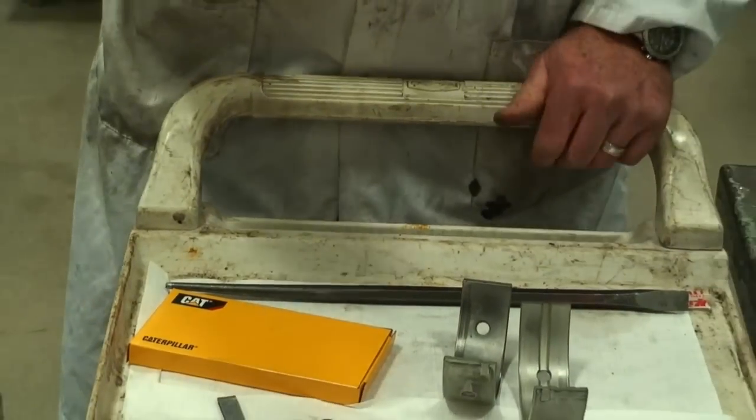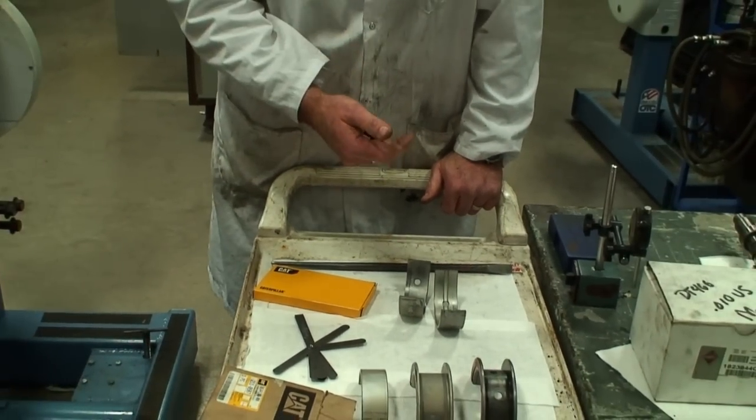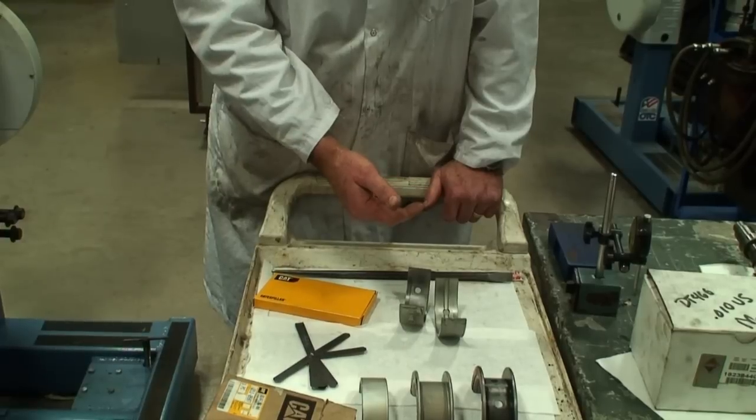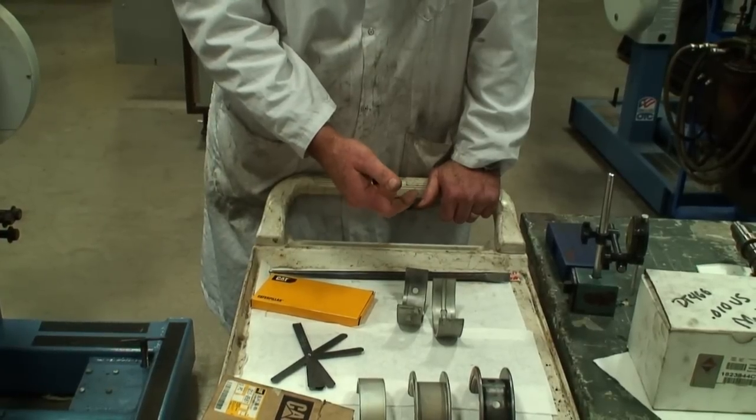In previous videos, I showed you the proper procedure for checking the running clearance, which we call VOC, which is Vertical Oil Clearance. We have to have the right amount of oil there to help lift and support that rotating component. If we have the right amount there, it provides lots of longevity to wear from the minimum spec up to the maximum spec.